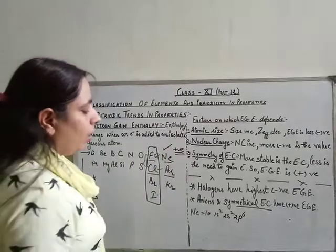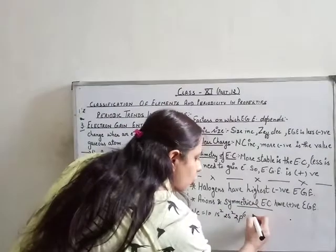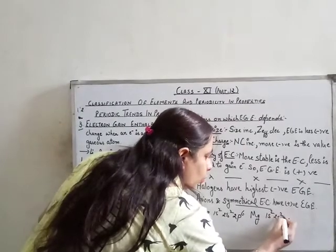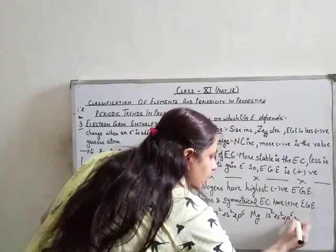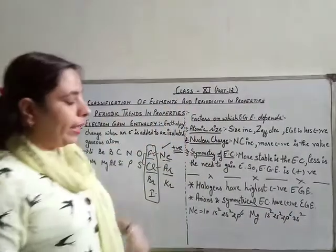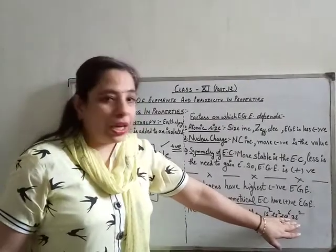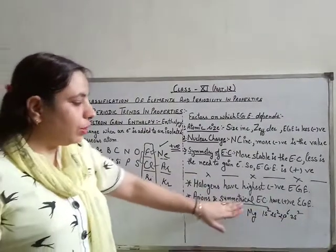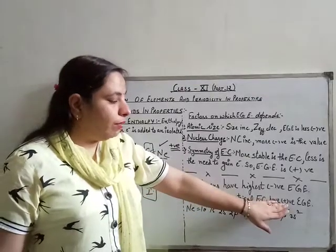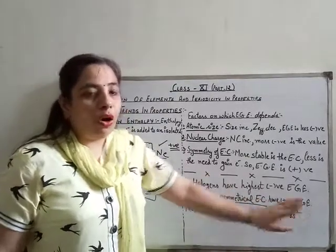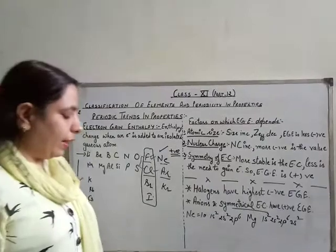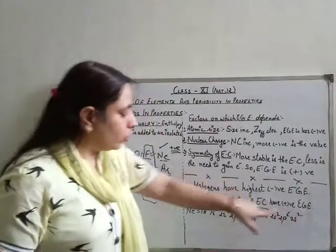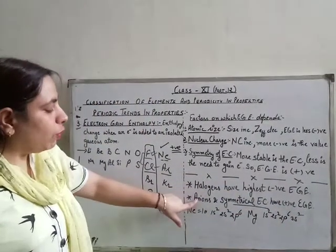Similarly, magnesium with configuration 1s², 2s², 2p⁶, 3s² also has a fully filled 3s subshell. So stable, symmetrical configurations show a positive value of electron gain enthalpy.